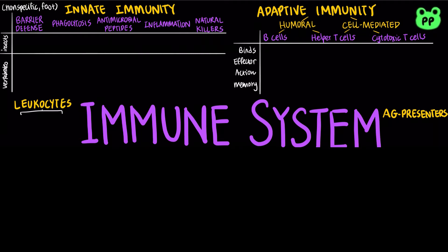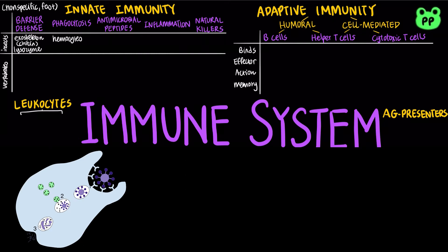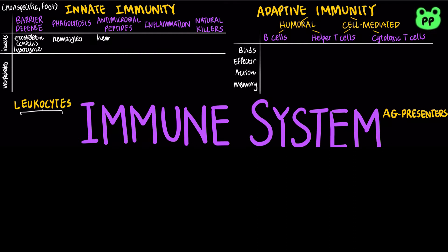Innate immunity for insects includes barrier defense, which involves an exoskeleton made of chitin and lysozyme that digests microbial cell walls. Hemocytes circulate within hemolymph and carry out phagocytosis — the ingestion and digestion of foreign substances including bacteria. Hemocytes also secrete antimicrobial peptides that disrupt the plasma membranes of bacteria.